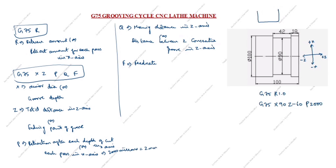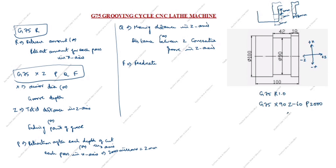We will take the groove tool as 2 mm, or we can take 3 mm also. If using a 3 mm tool, the tool comes down 2 mm first, then goes up 1 mm — because R1 retract amount is 1. So it goes 1 mm up, then comes back down 2 mm again until reaching the groove depth.